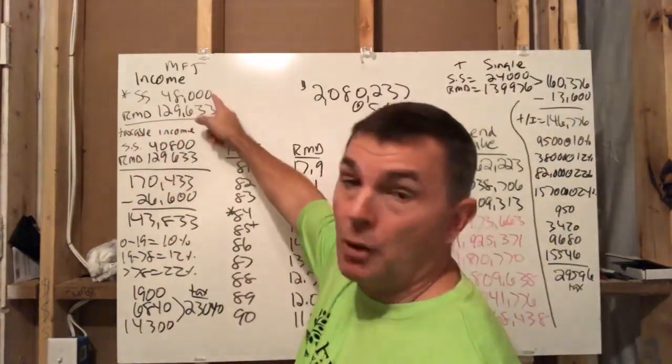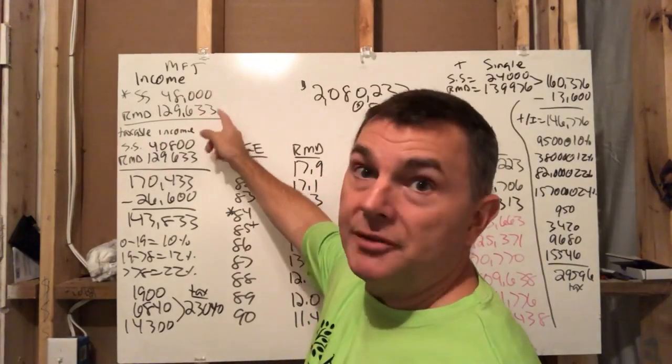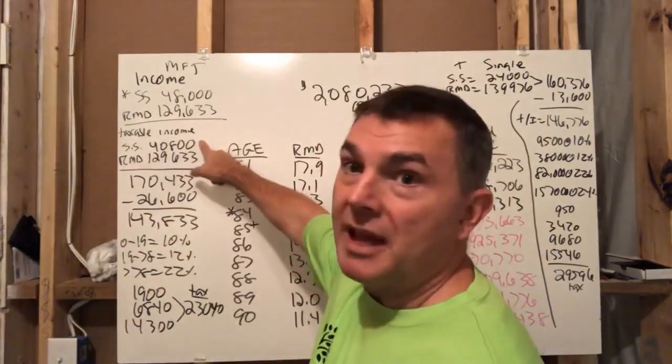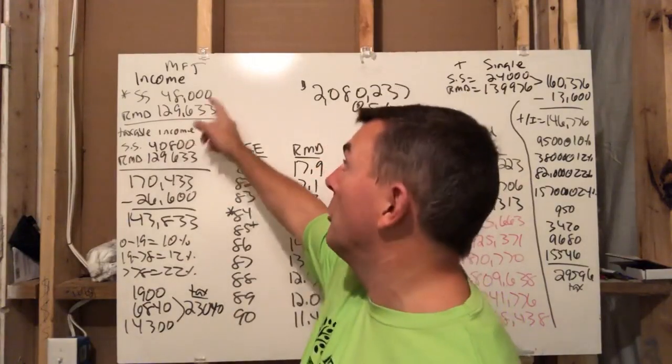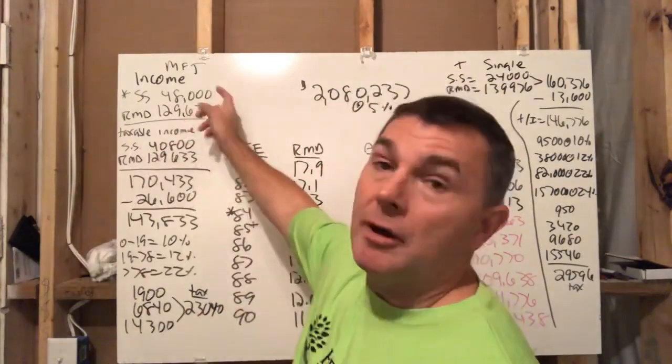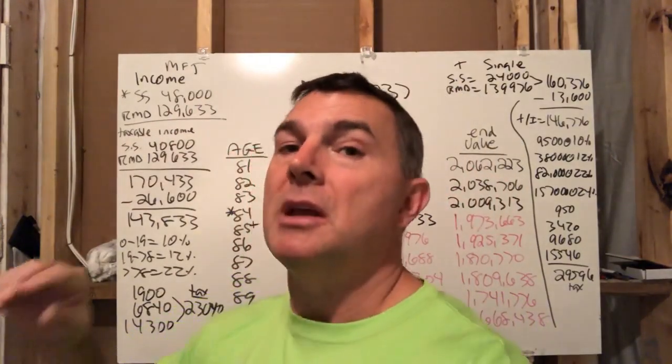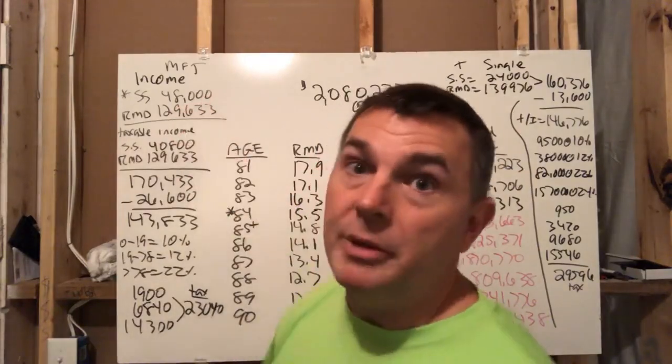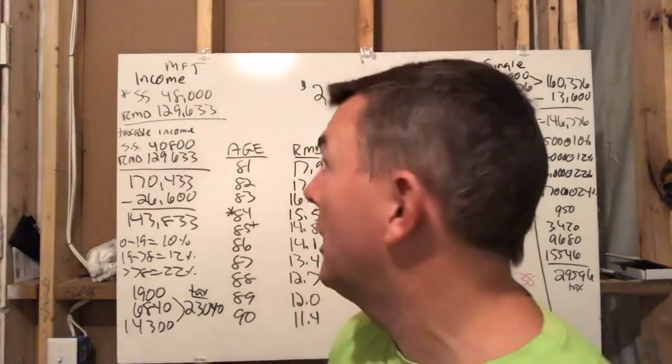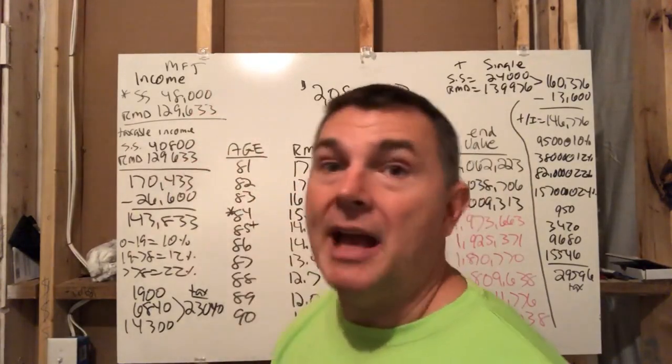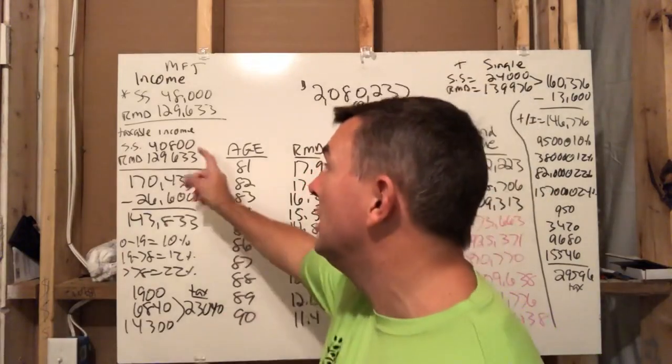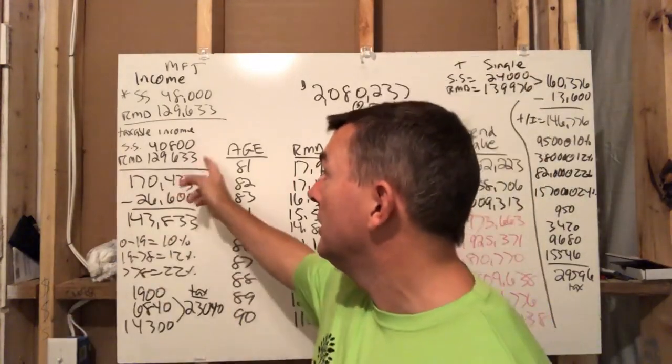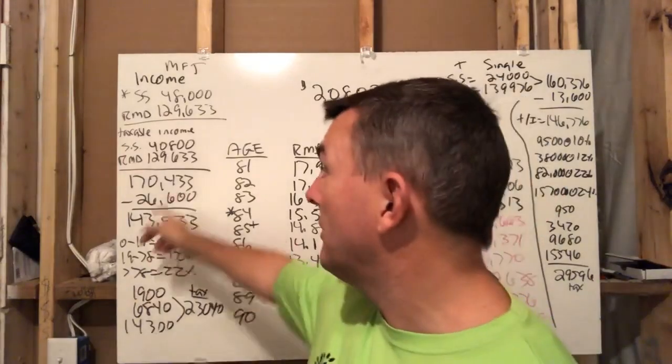All right. So she's still married filing jointly. So this required distribution will be still taxed as a married filing jointly taxpayer. So now what we do is we take their social security, half that, plus the required distributions. And that gives us not taxable income, but the amount of income that's going to be subject to taxation, 40,800 of their social security.